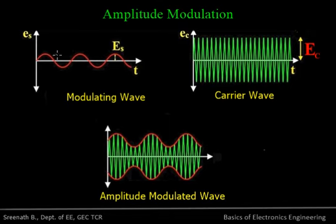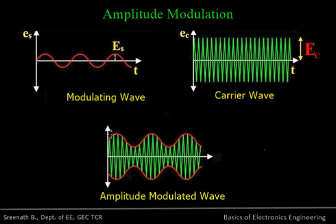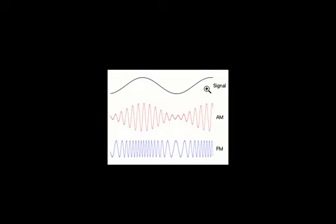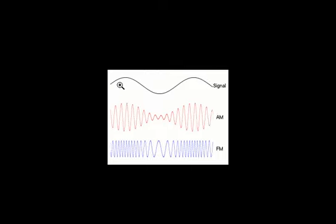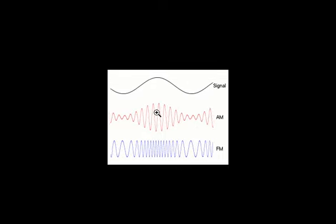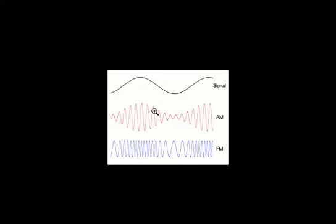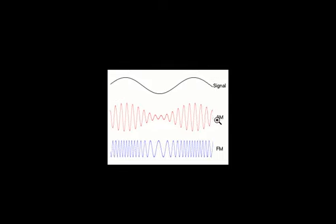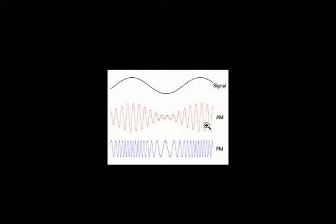In amplitude modulation, we have the modulating signal (the message signal) and a carrier with high frequency. The amplitude of the carrier is varied in accordance with the amplitude of the modulating wave. When the amplitude of the modulating wave increases, the amplitude of the carrier wave increases; when the modulating wave reduces its amplitude, the carrier wave also reduces its amplitude. The second figure shows the resulting amplitude modulated (AM) wave — the modulated signal.